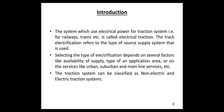Track electrification system refers to the type of source supply system that is used. The first is the DC system, in the range of 300 to 3000 volt DC. The second is a single phase low frequency AC system, and the third is a three phase low frequency AC system in the range of 25 kV AC at 50 to 60 hertz supply. The fourth is the composite system, which includes the TANDO system and the single phase AC to DC system in the range of 25 kV AC 50 hertz.